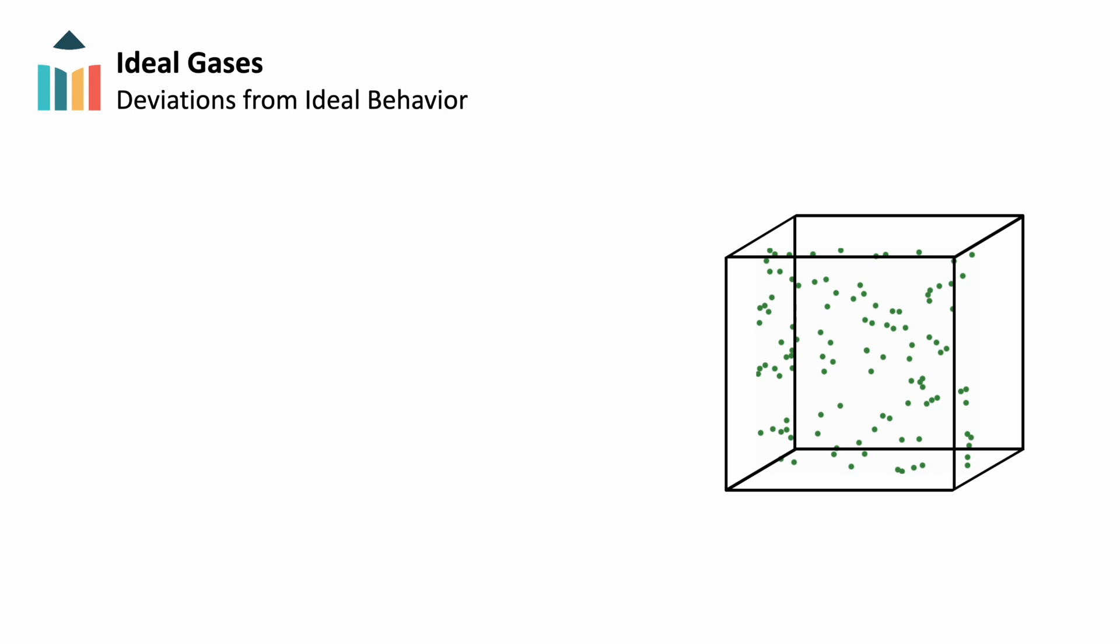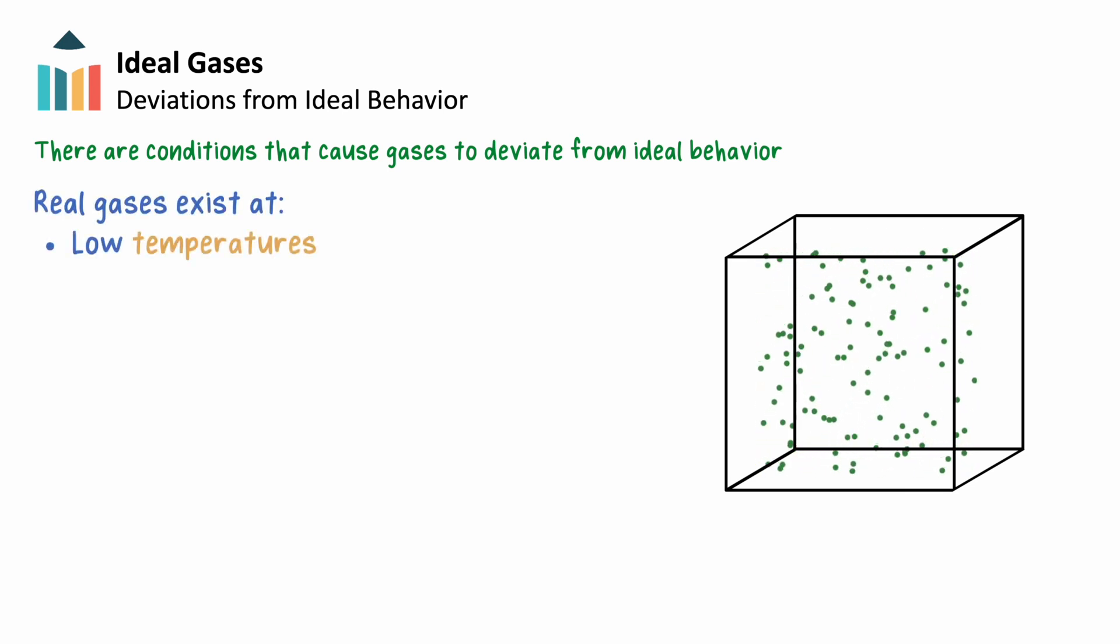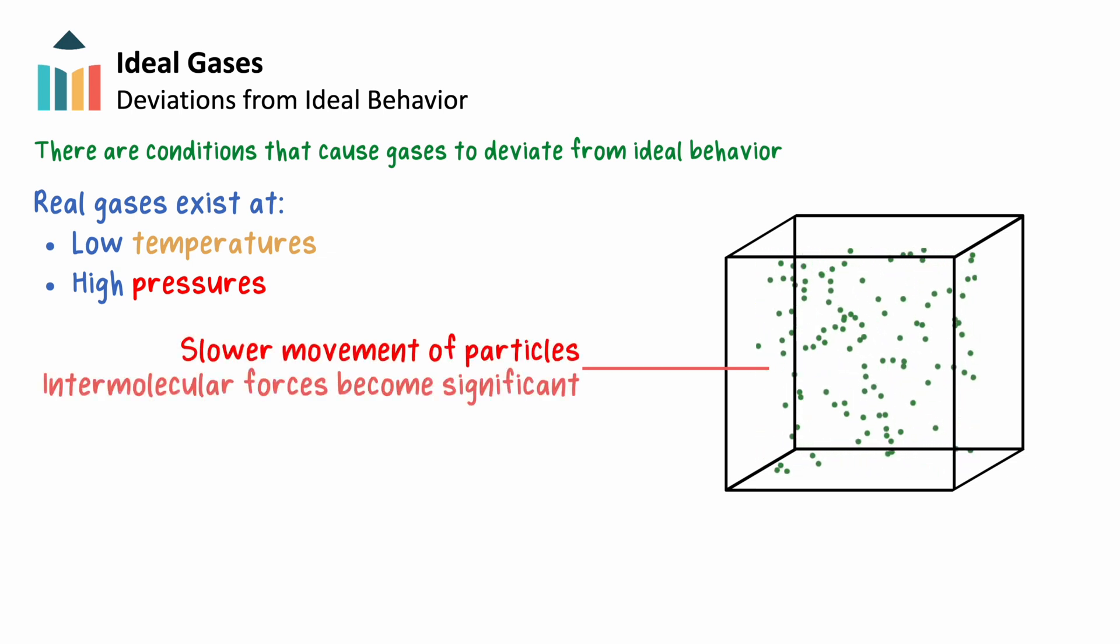With this in mind, there are of course conditions that will cause gases to deviate from this behavior and act as real gases. These conditions negate the assertions we made from before and force us to contend with intermolecular forces and molecular volume. Particularly, we see this at low temperatures and high pressures. At low temperatures, particles move slower, and intermolecular forces become more significant. We no longer have elastic collisions.